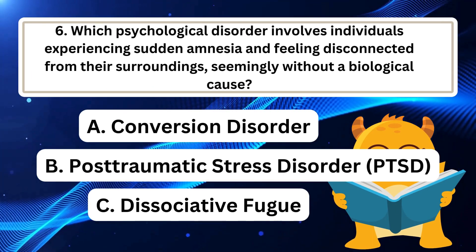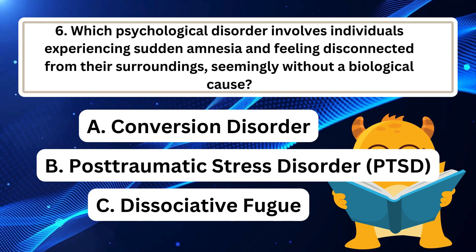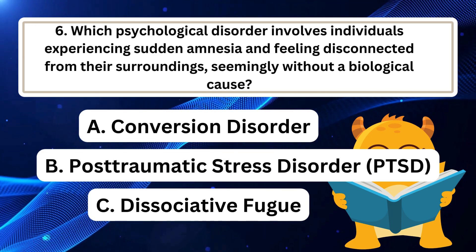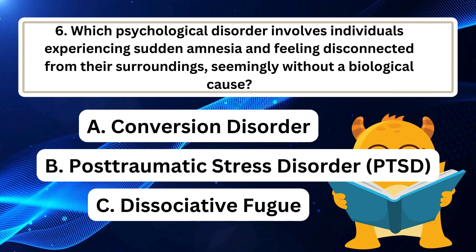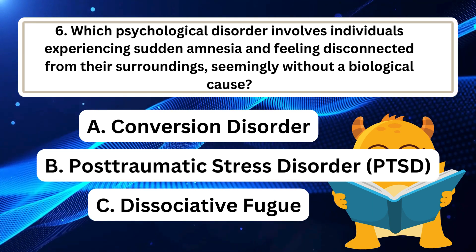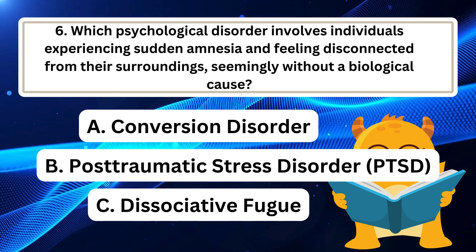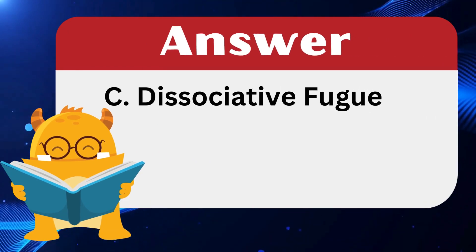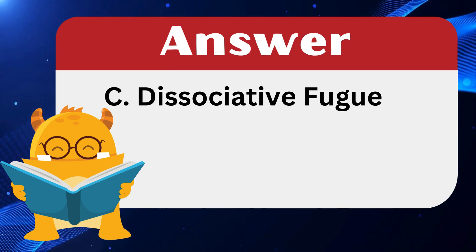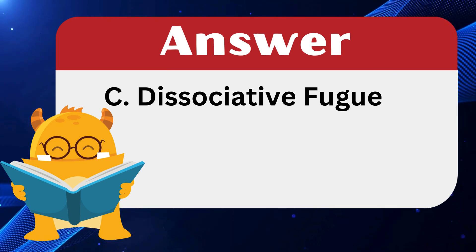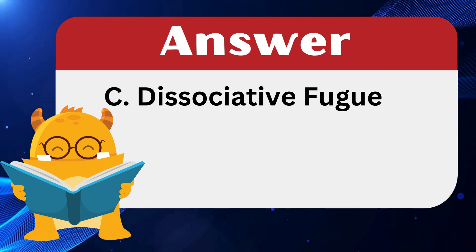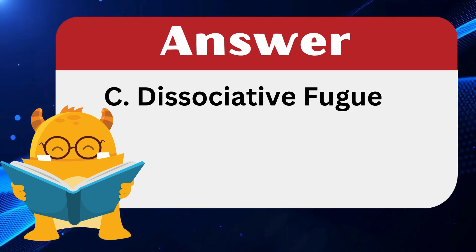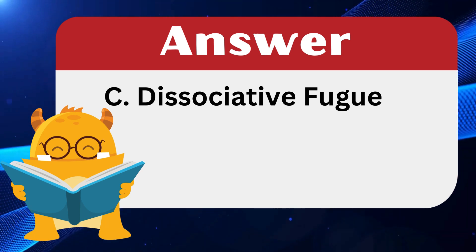Question 6: Which psychological disorder involves individuals experiencing sudden amnesia and feeling disconnected from their surroundings, seemingly without a biological cause? The answer is Dissociative Fugue. Dissociative fugue refers to an individual experiencing sudden amnesia and feeling disconnected from their surroundings without a clear biological cause. Conversion disorder involves severe physical symptoms without a clear biological cause, and PTSD involves flashbacks and nightmares of prior traumas.